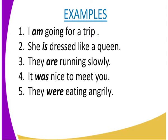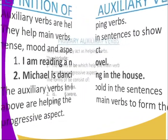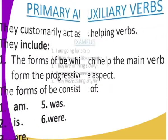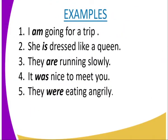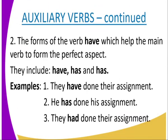'I am going' — so 'am' is our form of 'be.' Another example: 'She is dressed like a queen' — 'is' is another form of 'be.' 'They are running slowly' — the progressive aspect is 'running,' assisted by 'are.' 'It was nice to meet you.' 'They were eating angrily.'